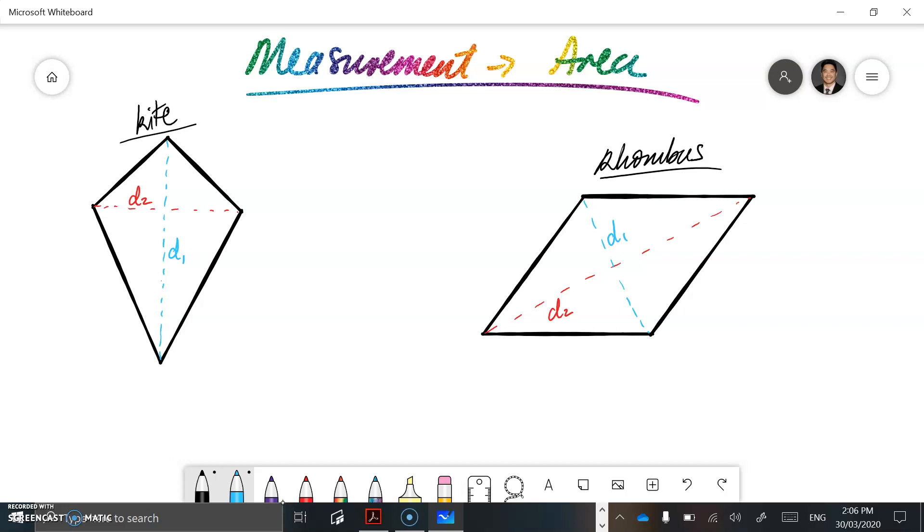Now, the good thing about the area of these two shapes, they share the same formula, where you have D1 multiplied by D2 divided by 2 is going to give you your area of your shape.